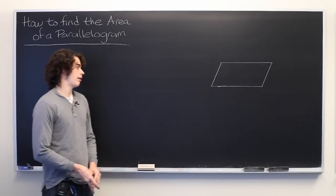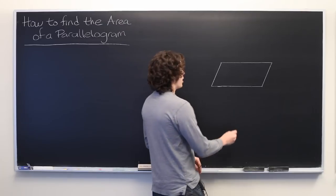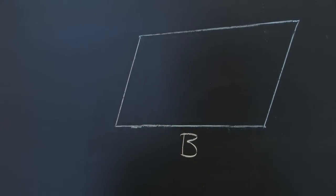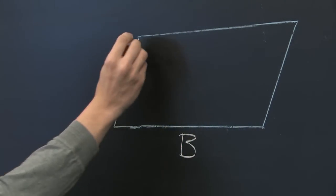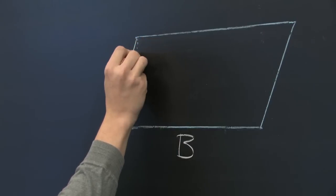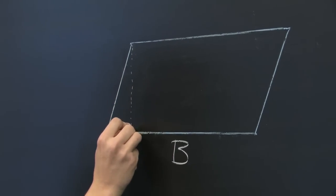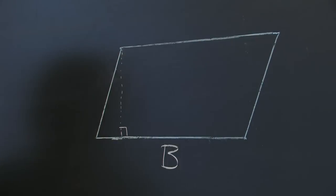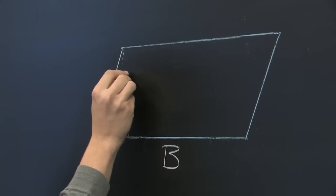So here we have some parallelogram. Let's go ahead and call this bottom side B for base. And from this top corner vertex, we're going to drop down a height, which we know is going to be perpendicular to the base. And we'll call that length H.